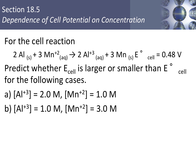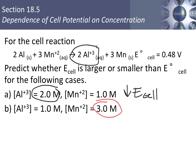Here's our redox reaction, all balanced, with a standard cell potential of 0.48 volts. We'll make a prediction whether the cell potential should be larger or smaller than standard when we change concentrations. In example A, the aluminum ion concentration is 2 molar, and aluminum ion is a product — so increasing the concentration of a product decreases the driving force of the electrons, and we should see a decrease in cell potential. In the next example, we have 3 molar manganese ion, which is a reactant — increasing the concentration of a reactant gives an increase in cell potential.